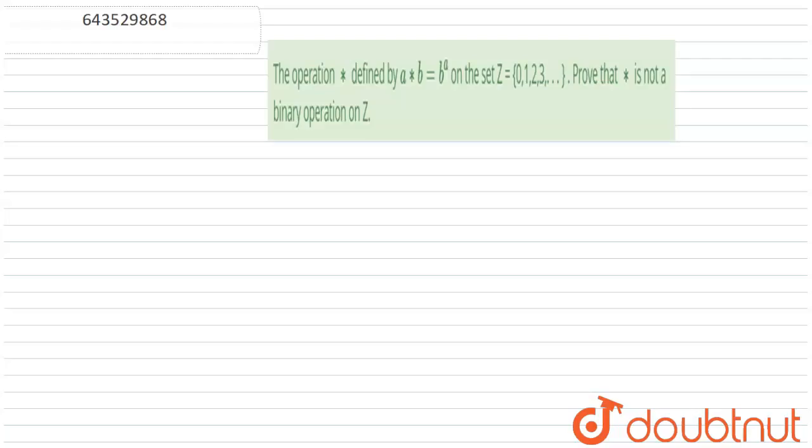Hello student, the given question is the operation star defined by a star b is equal to b raised to a on the set Z is equal to 0, 1, 2, 3, and so on. Prove that star is not a binary operation on Z.